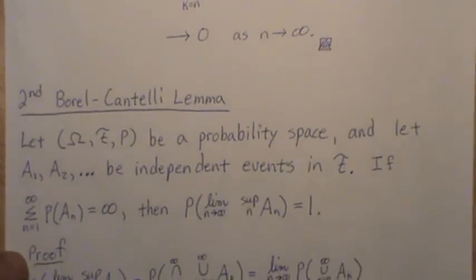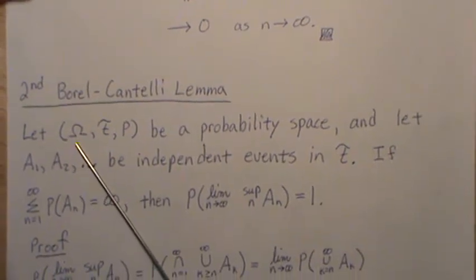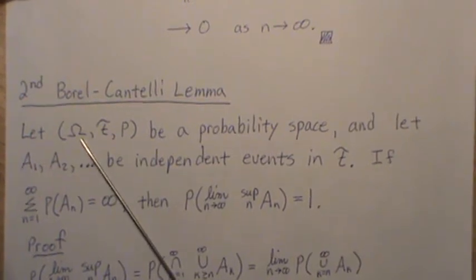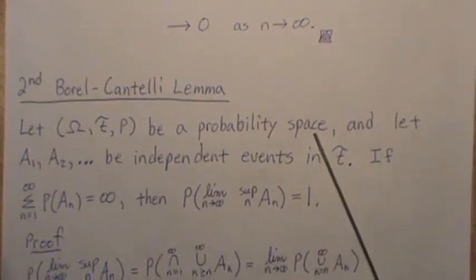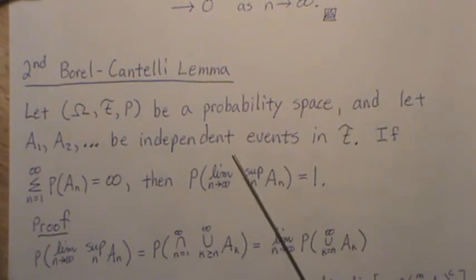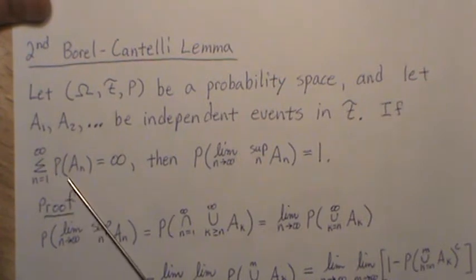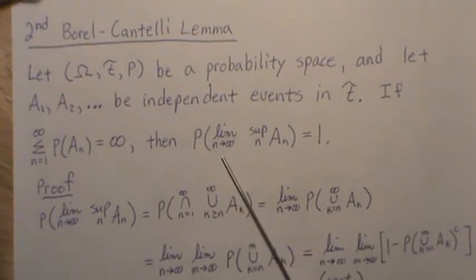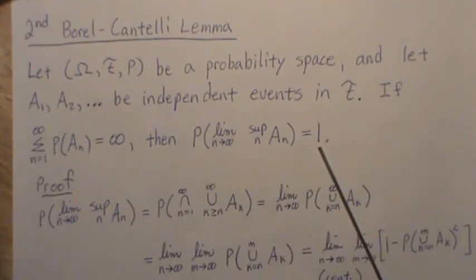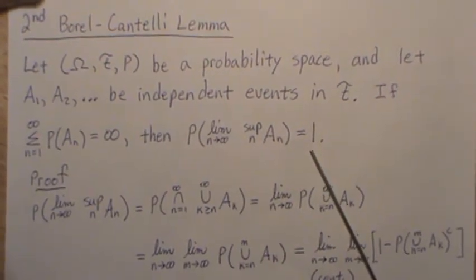Now, the second Borel-Cantelli lemma deals with an infinite series that goes to infinity. So let the tuple omega, F, and P be a probability space. And let the sets a1, a2, ... be independent events in the sigma field F. If the infinite sum of the probability of aN is equal to infinity, then the probability of the limit supremum of aN is equal to one. And this leads to the infinite monkey theorem, which we'll discuss at the end of this proof.